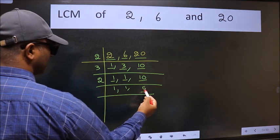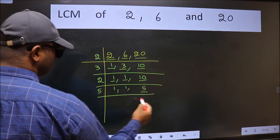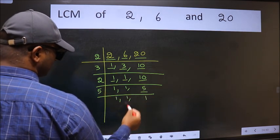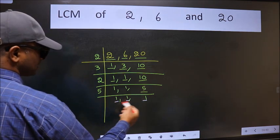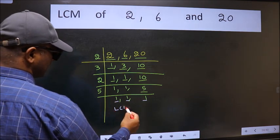Now here we have 5, 5 is a prime number so 5, 1 is 5. So we got 1 in all the 3 places. So our LCM is,